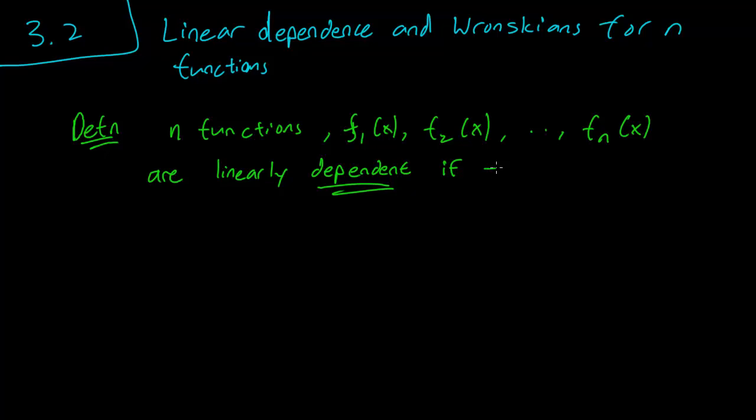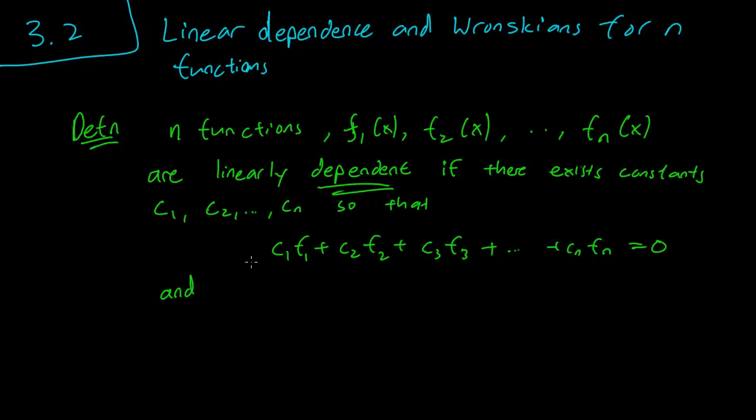if there exists constants c1 up to cn, so that c1f1 plus c2f2 plus c3f3 plus... cn fn equals 0, and the ci are not all zero. And this is going to be for all x, because f are functions of x.